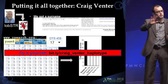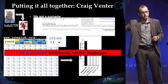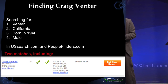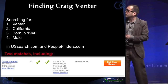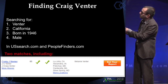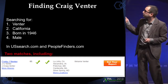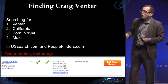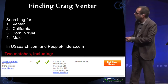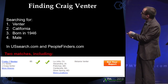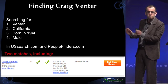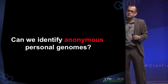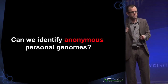So we can take whole genome sequencing data and get to a surname. But I want to see if I can get to Craig Venter specifically. Assuming metadata about Venter's age and state of residency — Venter, California, born 1946, male — I went to USsearch.com and peoplefinders.com, both public record search engines available for free. Inserting just those four pieces of information, only two records matched the profile, one of which is Craig J. Venter. You can see where he was living, and get a detailed report for about $5, though we just used the free version.